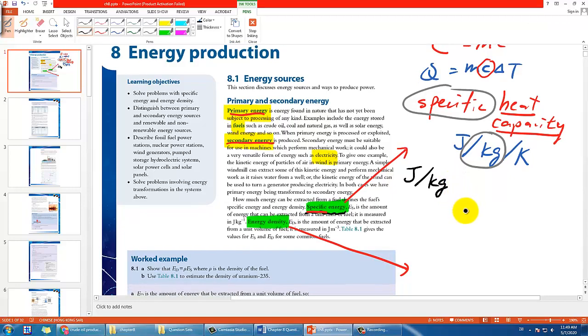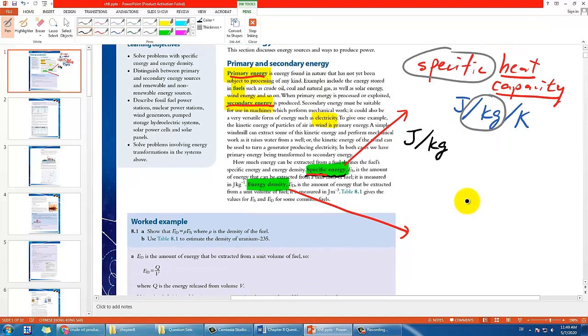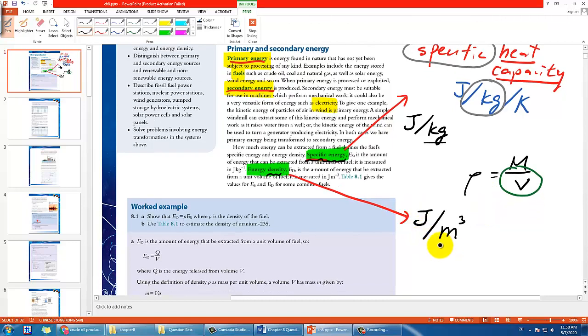Energy density considers something similar, but instead of using kg, think about what you learned about density. For density, we have density equals mass over volume - it's per unit volume. Here's the same idea: energy density has units of joules per unit volume. In SI units, don't write V but write meter cubed. These two measure the density of energy in a certain material but use different ways: one using kg, one using volume in meter cubed.